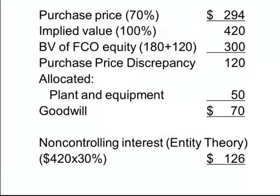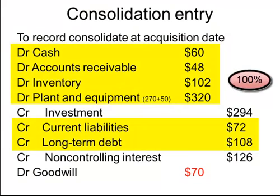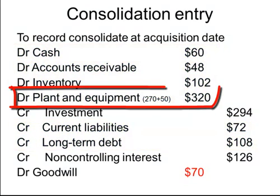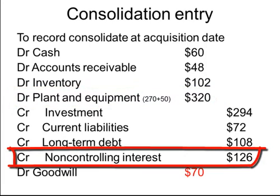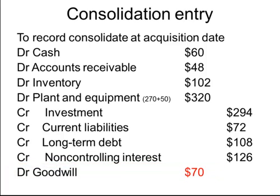Let's look at a journal entry to understand what this looks like. To consolidate EFCO at the acquisition date, the journal entry would look as follows. Note that 100% of the asset and liability values are being recorded in the consolidation, not just Parent Company's 70%. Plant and equipment have been recorded at their fair value of $320,000 at the date of acquisition, which includes 100% of the fair value increment. Non-controlling interest is recorded as $126,000, as calculated on our previous slide. The value of the non-controlling interest uses the same implied equity value as was used in the PICO acquisition. Finally, goodwill of $70,000 is recognized on the acquisition, representing the positive unallocated purchase price discrepancy.